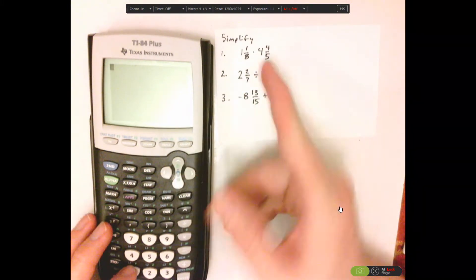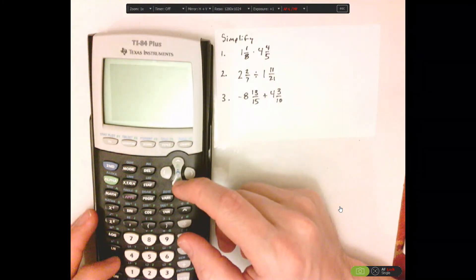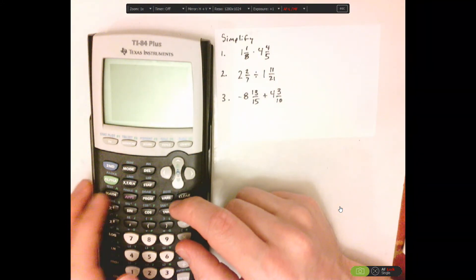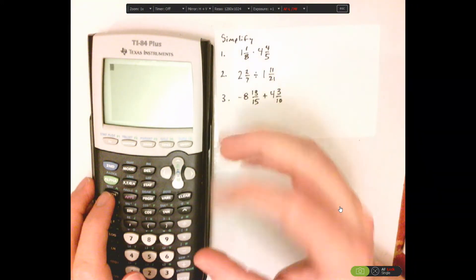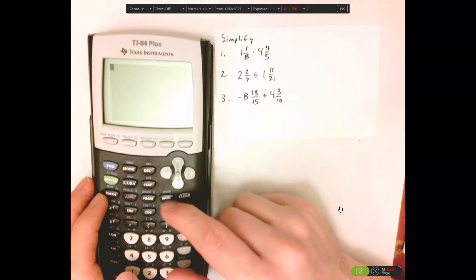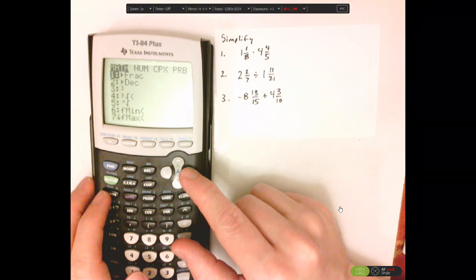Now, what you can do is type that in. So you would find that under the mixed number key, under math. So select math, and then go to number.